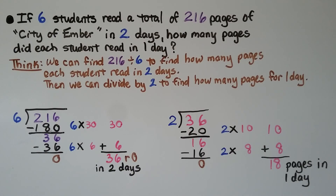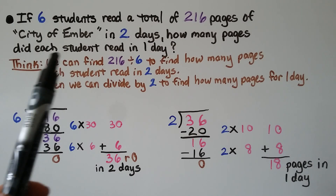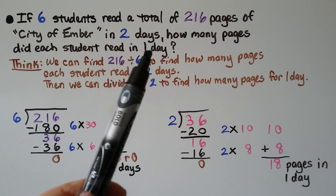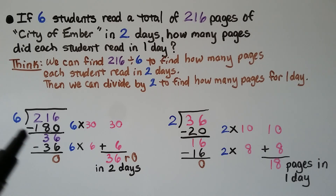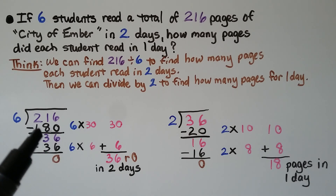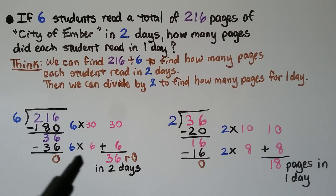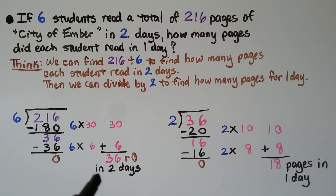If six students read a total of 216 pages of City of Ember in two days, how many pages did each student read in one day? We find 216 divided by 6 to get how many pages each student read in two days. We try 6 times 30, which is 180. We subtract it and get 36. Then 6 times 6 is 36 — subtract that and get a zero remainder. We add 30 and 6 to get 36 pages in two days for each student.